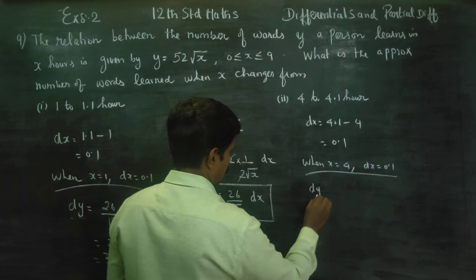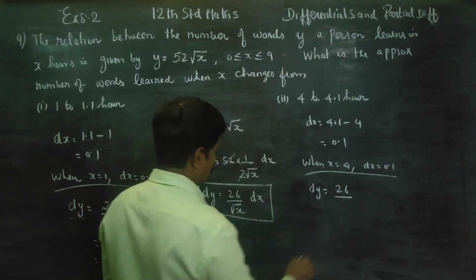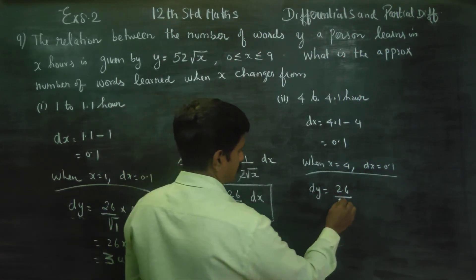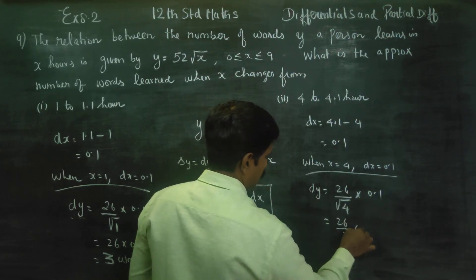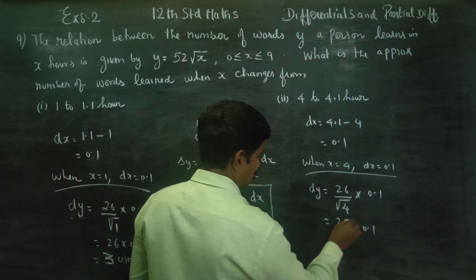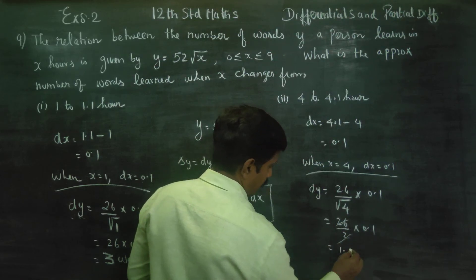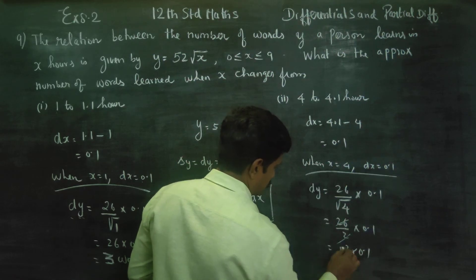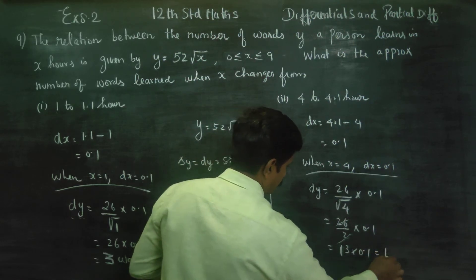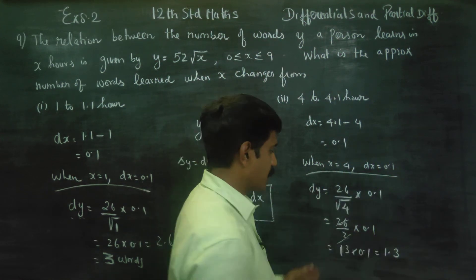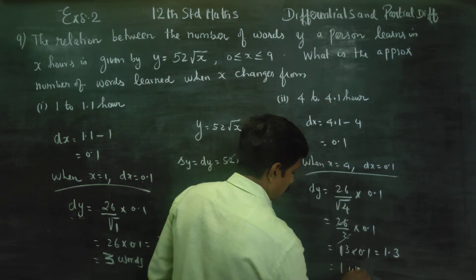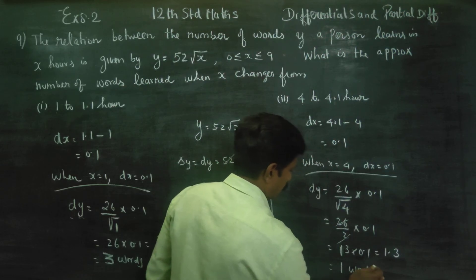dy is equal to 26 by root x. Root x is root 4 into dx into 0.1. So, 26 by 2 into 0.1. If I cancel, you will be getting 13 into 0.1, which is 1.3. 1.3 is equal to approximately 1 word.